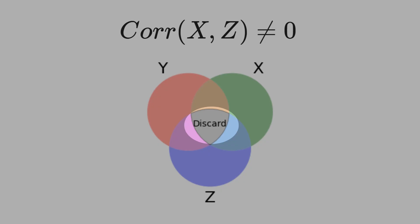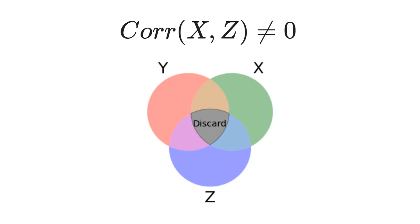Look at the black area. That is the intersection between X, Y, and Z. In multiple regression, you discard this black area. You discard this information. Why?